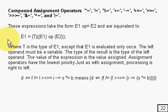Here's what they mean. You're going to see expressions like E1 op= E2, and it's equivalent to E1 = (T)(E1 op E2), where T is the type of E1. That's a cast going on in there. That's what it's equivalent to, except that E1 is only evaluated once.